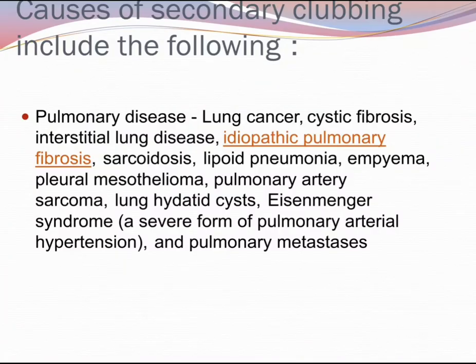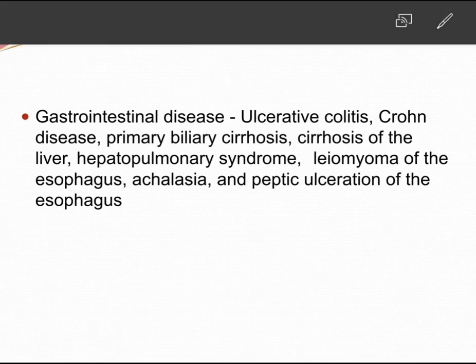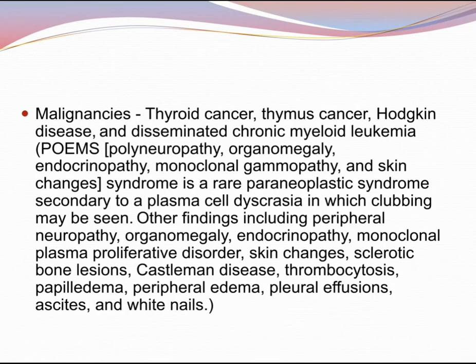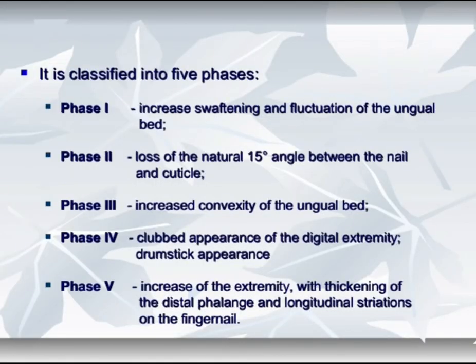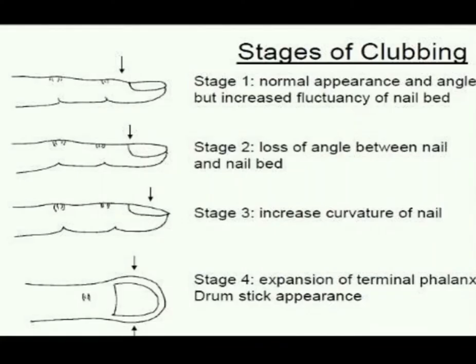Now let's talk about the stages of finger clubbing. Stage one includes increased softening and fluctuation of the ungual bed. Stage two is loss of the natural 15-degree angle between the nail and cuticle. Stage three is increased convexity of the ungual bed. Stage four is the clubbed appearance of the digital extremity, commonly called the drumstick appearance. Stage five is increase of the extremity with thickening of the distal phalanx and longitudinal stretches on the fingernail. Some texts describe just four stages.